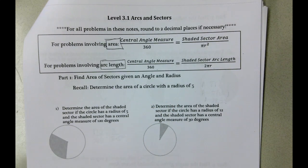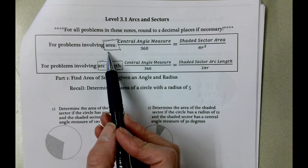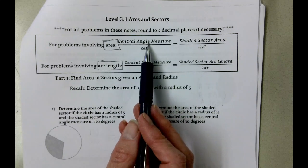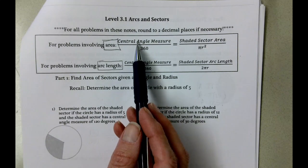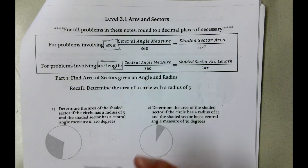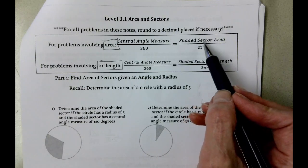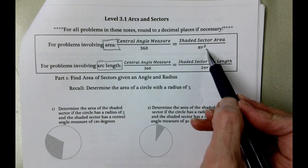First of all, for problems involving area, we're going to set up this proportion of the central angle measure over 360 degrees. Remember, central angle has the vertex at the center of the circle. And then that's going to equal the shaded sector area over the formula for area of a circle, which is πr².